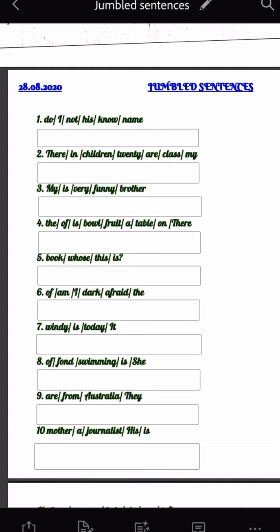Fifth, book, whose, this, is. Whose book is this? Of, am, I, dark, afraid, the. I am afraid of the dark. Seventh, windy, is, today, it. It is windy today. Of, fond, swimming, is, she. She is fond of swimming. Are, from, Australia, they. They are from Australia.